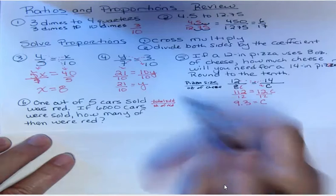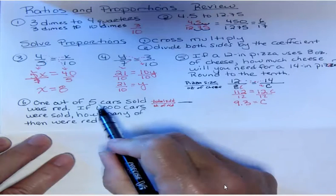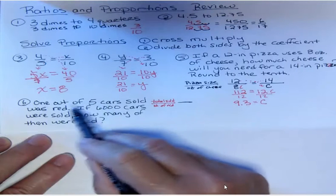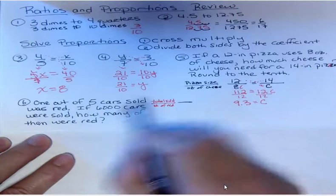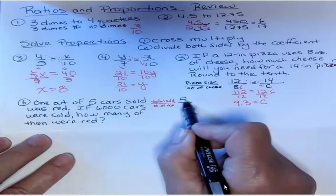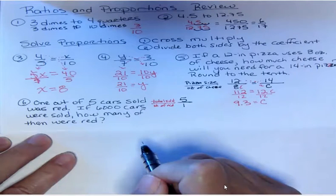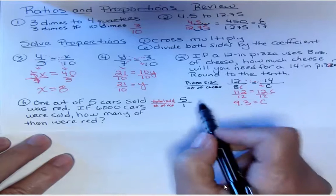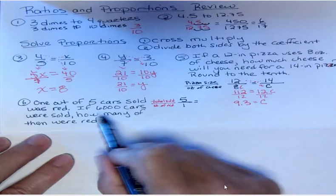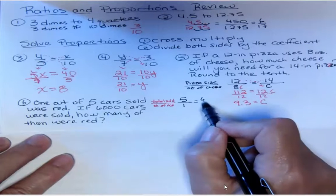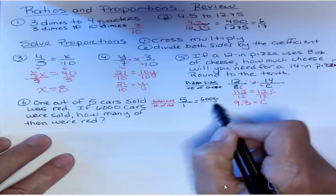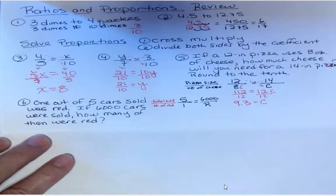And so what I have is one out of five, one out of five cars. So for five cars sold I had one that was red. That's how I have to compare those. And then if 6,000 cars were sold, how many of them were red? I'm gonna call that R, just because I like R. I could use any letter you want.